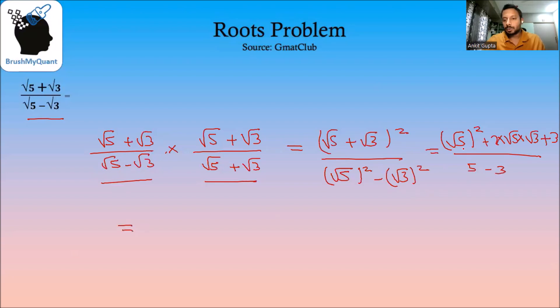So in the numerator we'll have square root of 5 squared which is 5 plus 3, that becomes 8, plus 2 root of 5 into 3 which is 15, divided by 2.